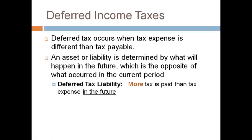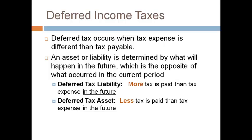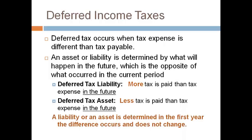A liability occurs when more tax is paid in the future than tax expense. An asset occurs when less tax is paid in the future than tax expense. Whether the deferred tax is an asset or a liability is determined in the first year the difference occurs — a difference does not switch back and forth between an asset and a liability.